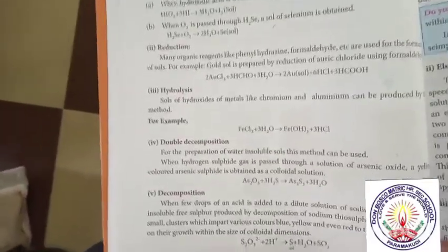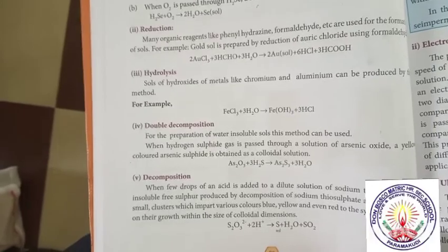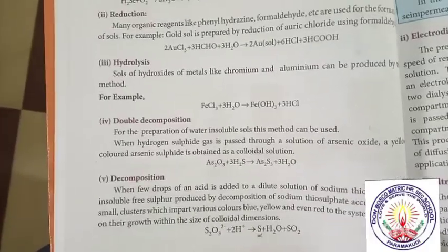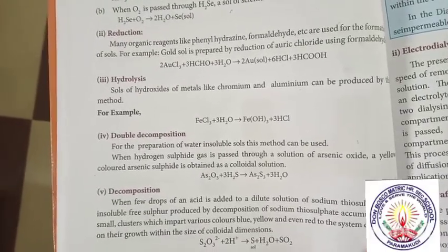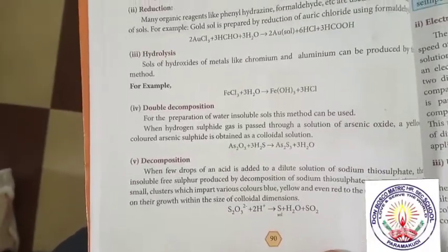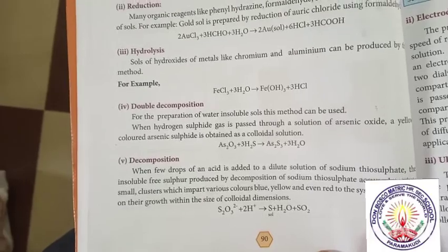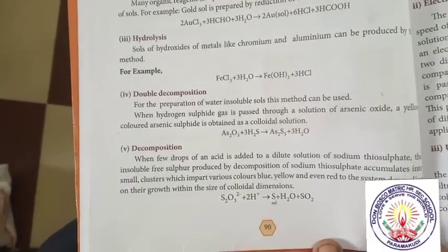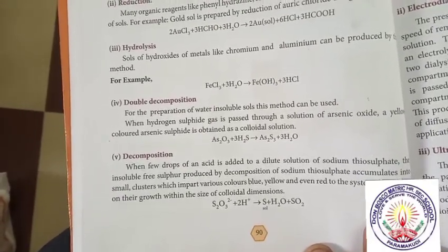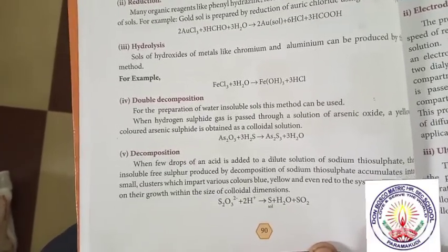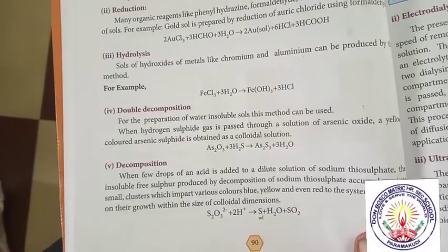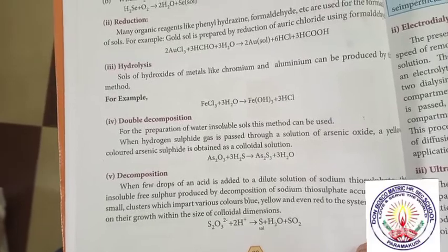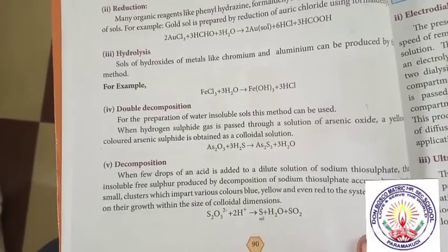Double decomposition — for the preparation of water-insoluble sols, this method can be used. When hydrogen sulfide gas is passed through a solution of arsenic oxide, a yellow-colored arsenic sulfide is obtained as a colloidal solution. Decomposition — when a few drops of acid are added to a dilute solution of sodium thiosulfate, insoluble free sulfur produced by decomposition of sodium thiosulfate accumulates into small clusters which impart various colors — blue, yellow, and even red — depending upon their growth within the colloidal size range.